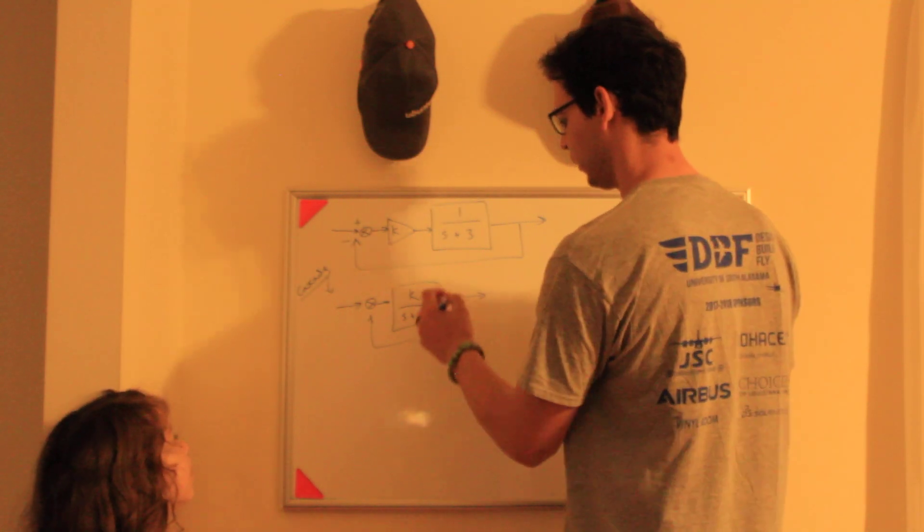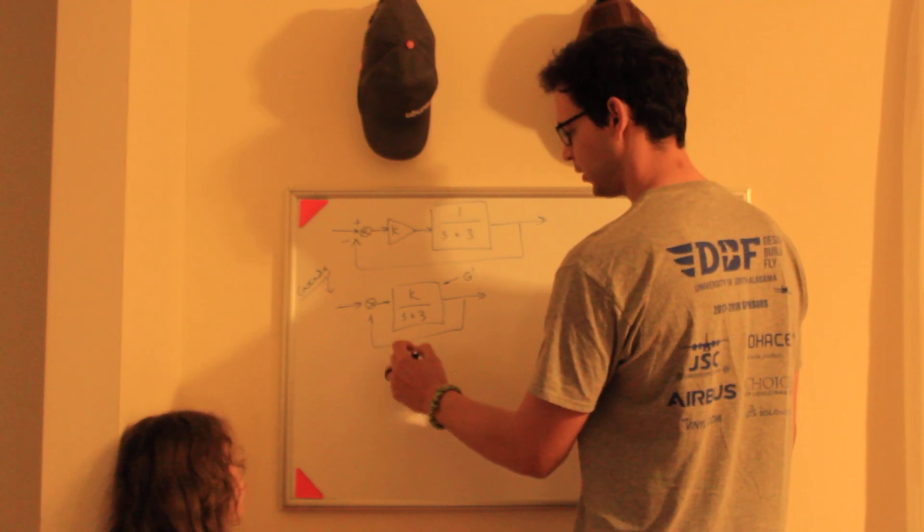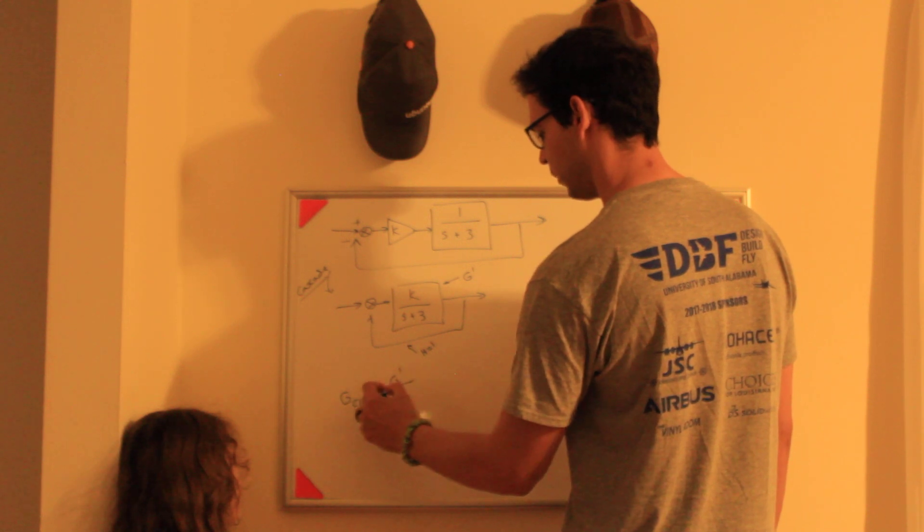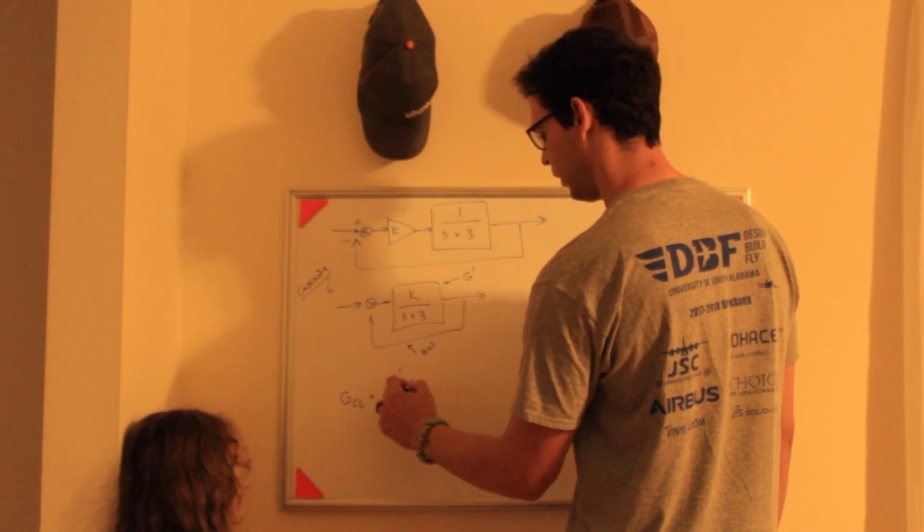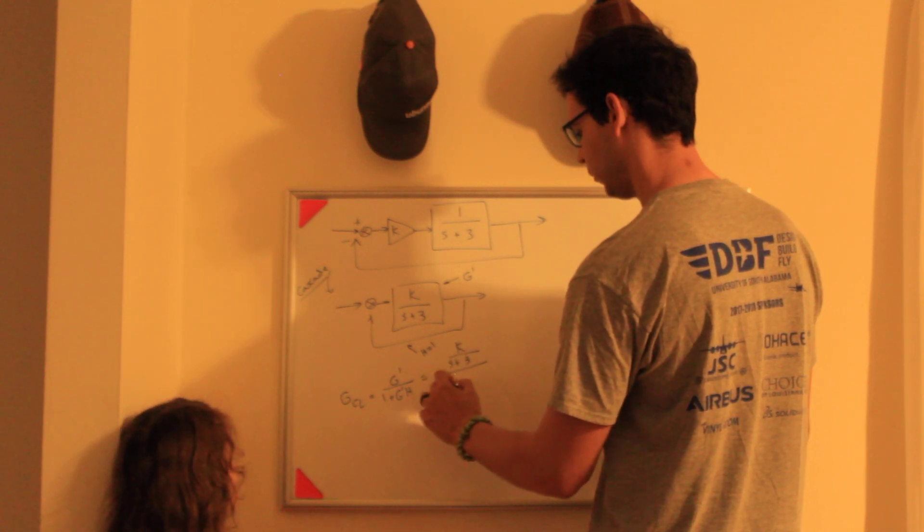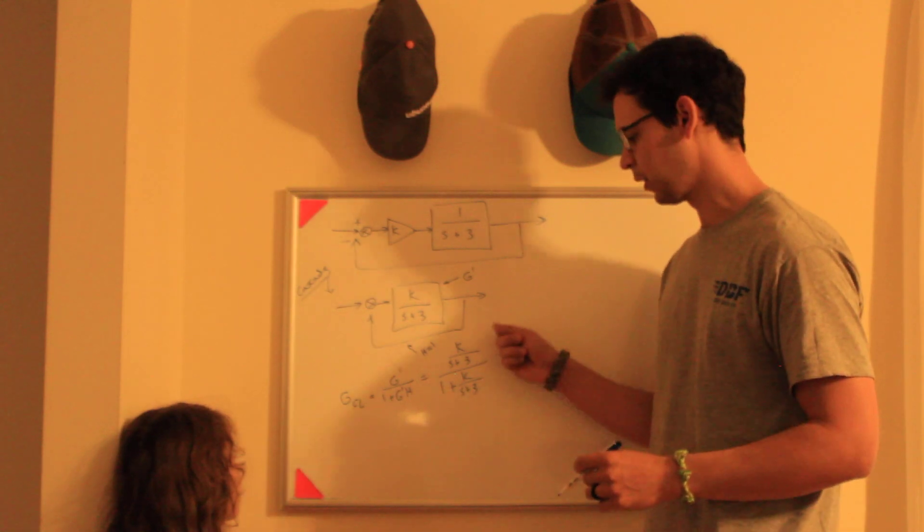I'm going to combine all blocks together. I'll call this G prime and H down here is 1, so the closed-loop formula is G prime over 1 plus G prime H. You get K/(s+3) over 1 plus K/(s+3).